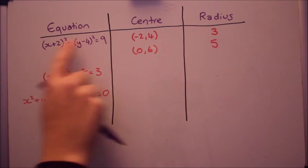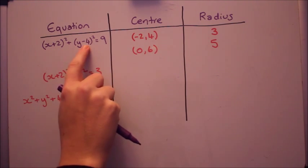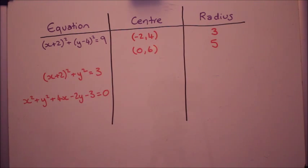OK, so that one, I changed the signs. Again, it's positive 2, negative 4 and I squared the radius so it's equal to 9.